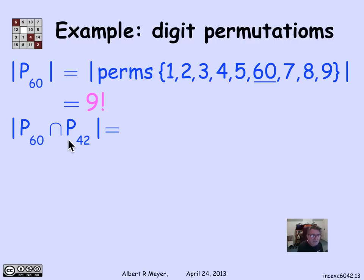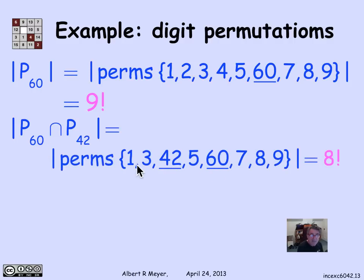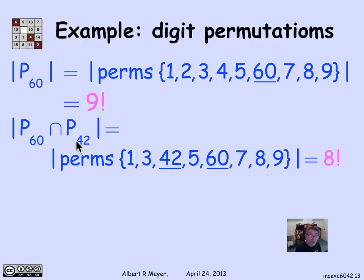For P60 ∩ P42 — permutations containing both a 6,0 and a 4,2 — treat '6,0' and '4,2' each as single objects, along with the remaining digits 1, 3, 5, 7, 8, 9. That's 8 objects total, giving 8 factorial permutations. This covers the case where the two patterns don't share any digits.